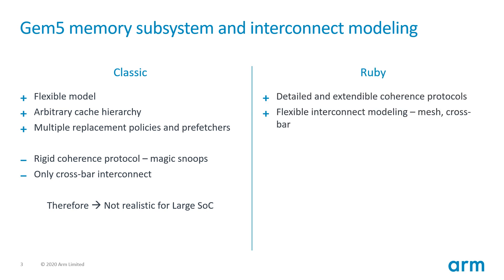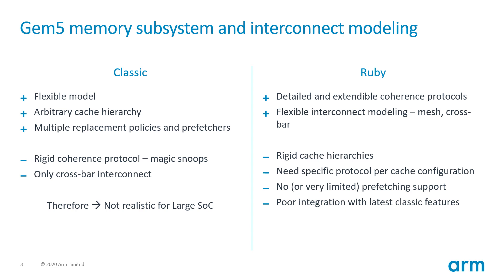On the other hand, we have the Ruby memory subsystem. Ruby provides a flexible on-chip network that can be used to create both crossbar and 2D mesh interconnects, and cache coherency is also modeled in detail with multiple different protocol implementations available. However, Ruby loses a lot of the existing flexibility that we have in classic. For instance, the cache hierarchy is fixed for each protocol, so if you want to change an existing configuration by adding another cache level, you have to either switch to a different protocol that models that exact cache hierarchy, or modify an existing protocol. If you have worked with Ruby before, you know that these protocols can be very complex and hard to debug, and modifying one of them is not a trivial task.